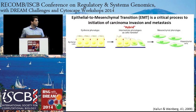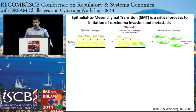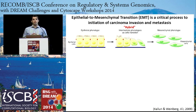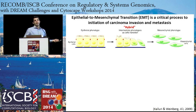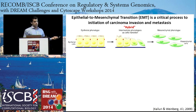I'd like to first talk about what EMT is. It is a developmental process that's actually hijacked by tumor cells to start the process of metastasis. Most solid tumors are carcinomas, which are of epithelial origin. Epithelial cells tend to have very strong adhesive properties, tend to be cuboidal, and have apical-basal polarity. As carcinomas progress, they actually lose this phenotype—they lose their adhesiveness and cuboidal appearance and become mesenchymal and elongated. This is one of the initiating steps in metastasis that allows cancer cells to start migrating out of the tumor.